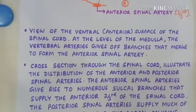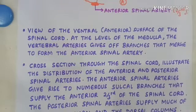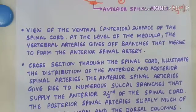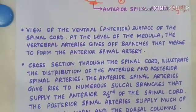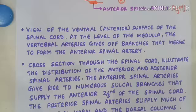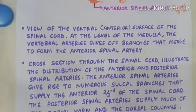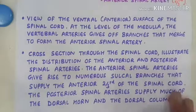The anterior spinal artery gives rise to numerous sulcus branches that supply the anterior two-thirds of the spinal cord, whereas the posterior spinal artery supplies much of the dorsal horns and dorsal columns, covering only one-third of the spinal cord.